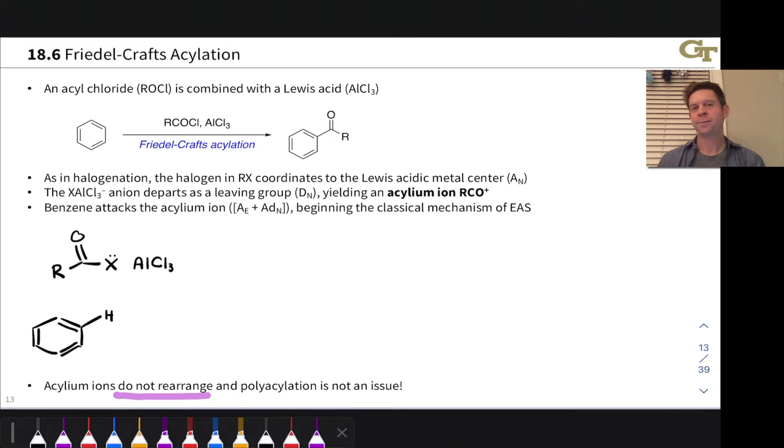The first step of generation of the active electrophile is familiar to us from halogenations and Friedel-Crafts alkylations. The chlorine atom coordinates to the electrophilic or Lewis acidic aluminum center and produces a reactive intermediate with X plus or Cl plus and AlCl3 minus.